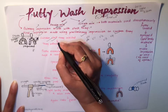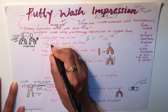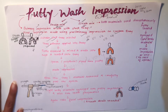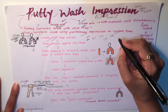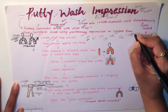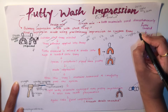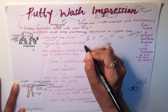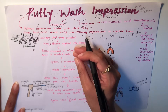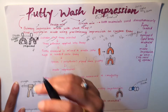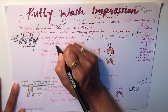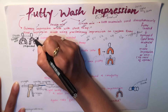The next step is to apply tray adhesive over the selected tray — for example, tray U2 for the upper jaw. The adhesive ensures that your impression material sticks well and adheres properly to the tray.